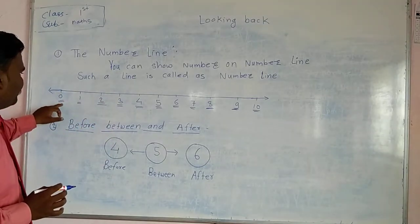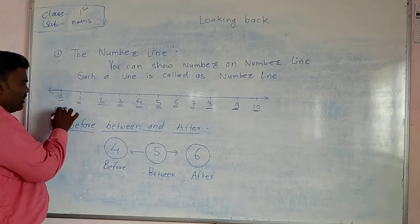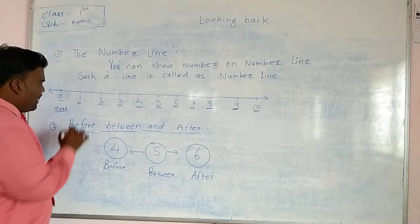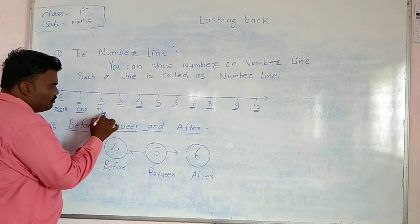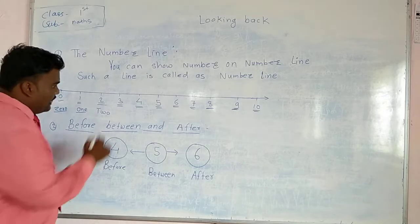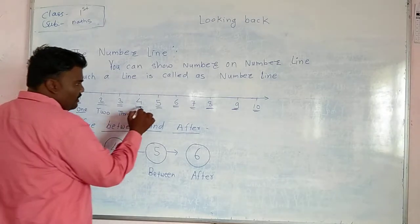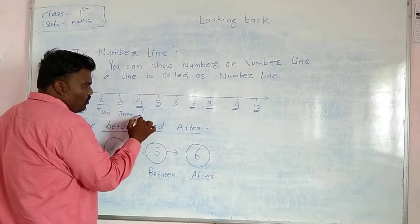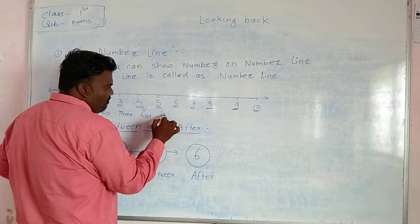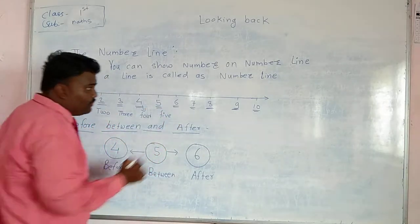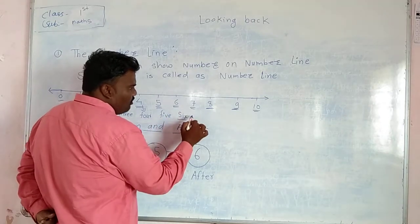What is this? This is the number line. What is this? This is number one. This is T-W-O, 2. This is T-H-R-E-E, 3. What is this? This is 4, F-O-U-R. This is 5, F-I-V-E, 5. And this is 6.